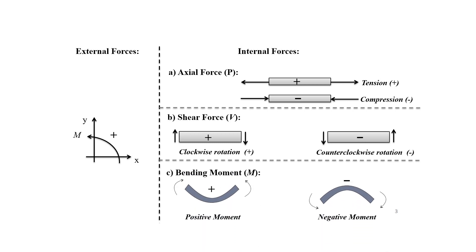Bending moment, denoted as M, is a moment that causes the beam to bend in a plane. If it causes sagging — a smiling face shape — it is positive. If it causes hogging, as it curves upward, it is negative.